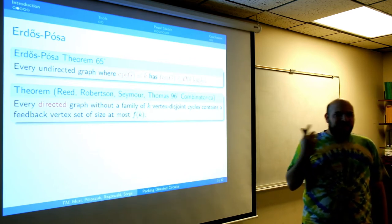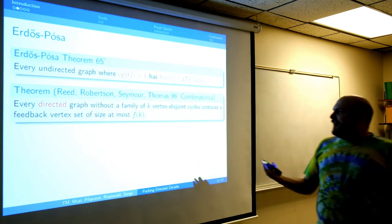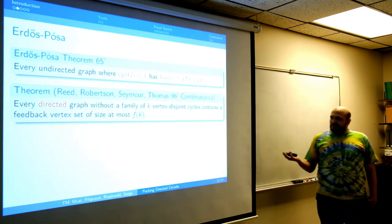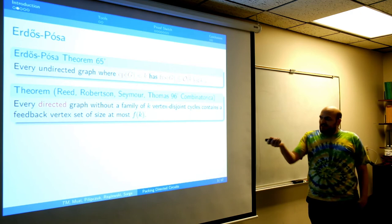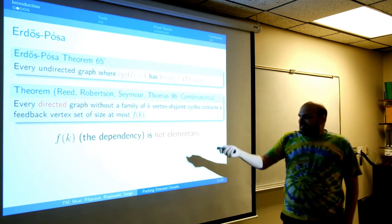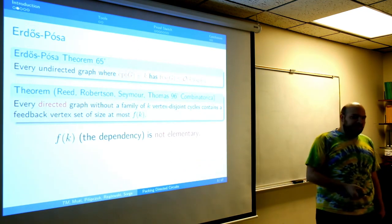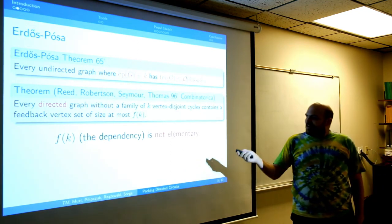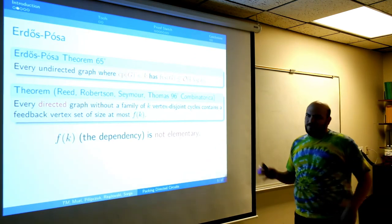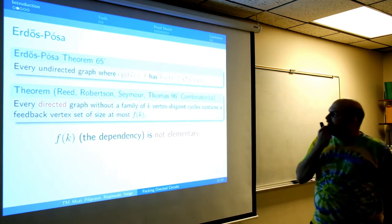It took quite a long time to turn this conjecture into a proof. It was done by Reed, Brandson, Seymour, and Thomas in 1996. They really showed that there is some function, but the problem is that the dependency is really huge — it depends on some Ramsey numbers and towers of them. The directed feedback vertex set just tries to break all directed cycles.